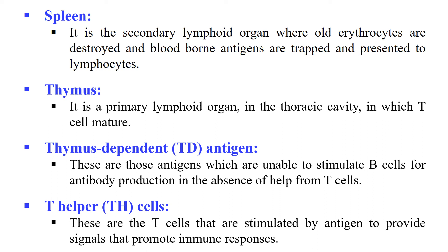T-helper Cells: as the name indicates, these are cells which help other immune cells to kill the antigen. They release cytokines which act as signals, and these cytokines interact with other cells and activate them, ultimately causing those cells to kill the pathogens.